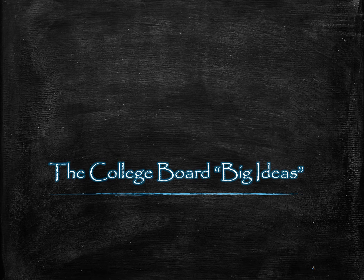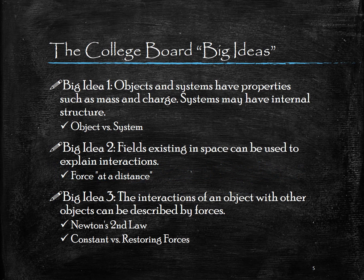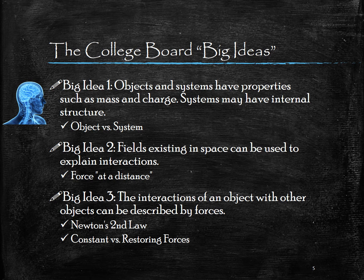So let's discuss the College Board's big ideas that run throughout the curriculum. There are seven big ideas, but let's start by looking at the first three. The first big idea is really being able to discriminate between what we define as an object and a system. Essentially, everything in the universe can be described as either an object or a system, and sometimes one thing can be an object or a system depending on your perspective for a specific problem. When we don't care about the inner workings or the smaller parts, that describes an object.